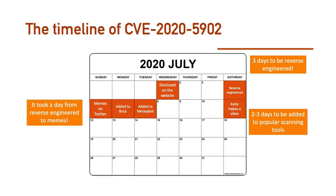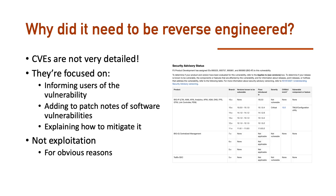So why did it need to be reverse engineered? CVEs are really not very detailed — they're focused on informing users of a vulnerability, adding patch notes about what's being patched and how, and explaining mitigation. They're focused on people who use that software and making them aware of the risk. There are no details on how it's exploited, and that's for obvious reasons — anyone who hasn't patched it is obviously vulnerable. So the first stage is reverse engineering the exploitation of the bug.